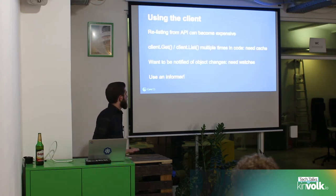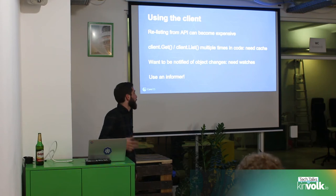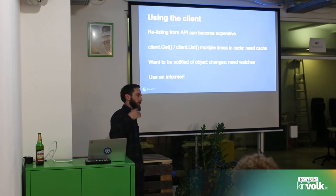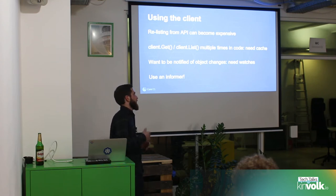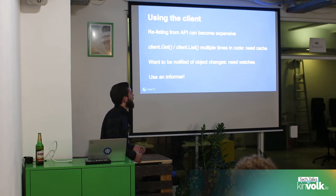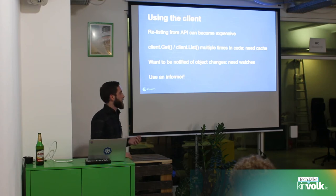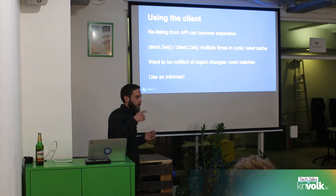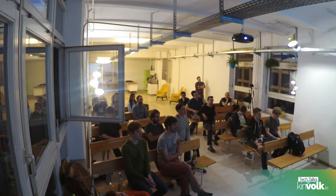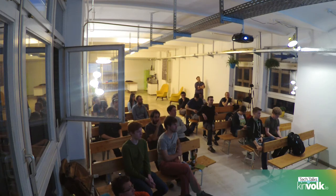Calling client.get or list over and over can become expensive — you're reaching out to the API, which reads from etcd, deserializes, does server-side filtering, reserializes, sends to the client, which deserializes again. Instead of constantly polling the API asking 'has anything about nodes changed in the last 10 seconds,' we should use a cache, or better, watch the API to be notified when a node is added, updated, or something like that. The client library handles this with an object called an informer.